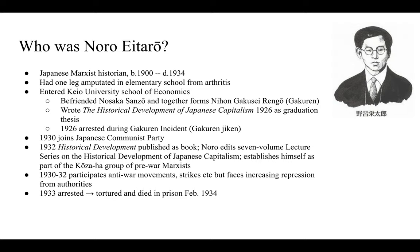Just a little background about Noro Eitaro: he was a Japanese Marxist historian who died quite young in 1934, tortured and dying in prison by Japanese authorities. He had one leg amputated in elementary school from arthritis, and he entered Keio University School of Economics where he befriended Nosaka Sanzo, the founder of the Japanese Communist Party. Together they formed the Nihon Gakusei Rengo, abbreviated as Gakuden. Noro wrote The Historical Development of Japanese Capitalism in 1926 as his graduation thesis.